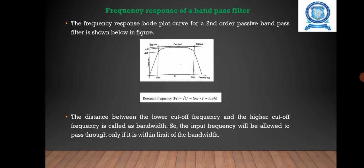Next, frequency response of a band pass filter. The bode plot curve for a second order passive band pass filter is shown in the figure. The resonant frequency equals the square root of f low times f high.